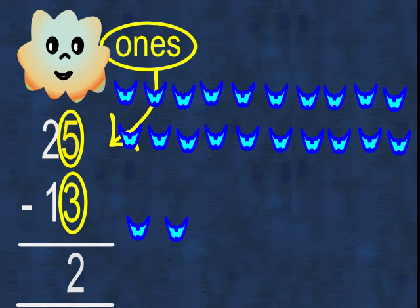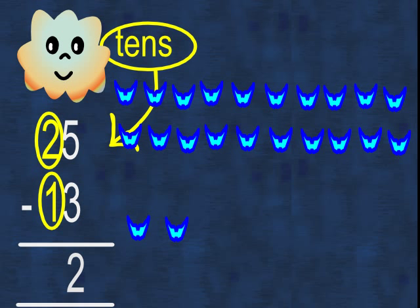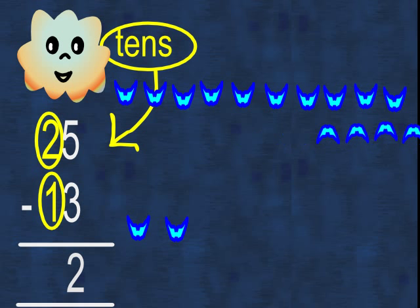Then we look at the tens column. We can take one lot of 10 birds away from the two lots of 10 birds, which leaves one lot of 10 birds. So the answer is 12, as this is how many birds we have left.